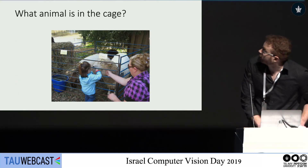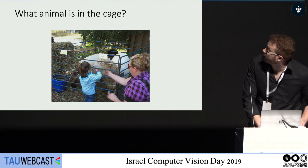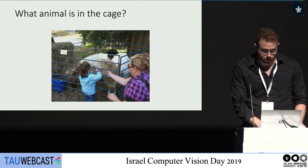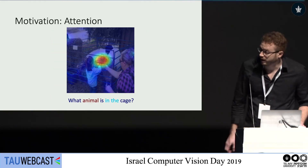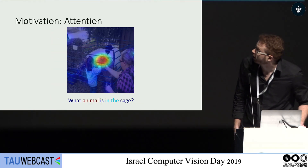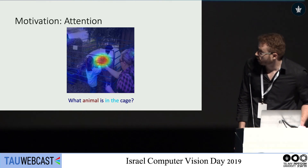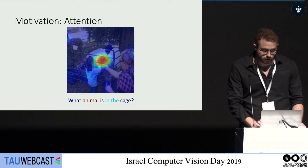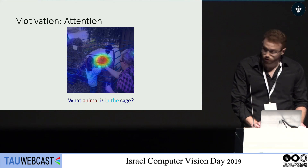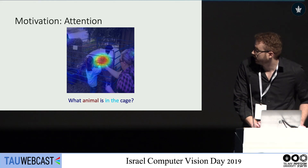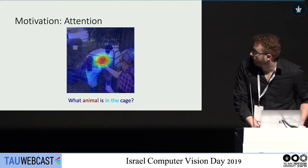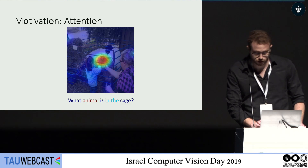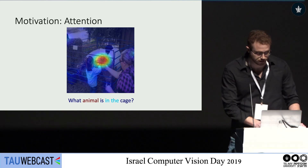When we look at the question 'what animal is in the cage?', the second motivation for our work is the need for attention. To answer the question, what we would want to do is concentrate on the sheep and also highlight the relevant words in the question. In this case, the attention chooses to highlight the word 'animal'.